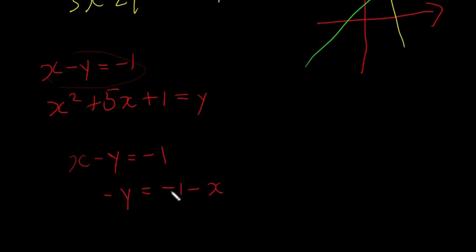So -y = -1 - x. And we can also write that as, this implies, y = 1 + x. We just multiplied everything by -1 and everything changed to plus. So this is our equation 1.